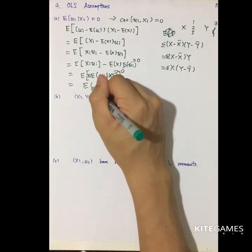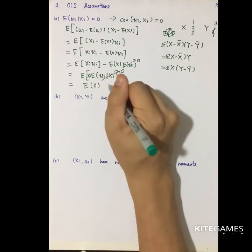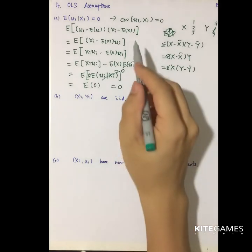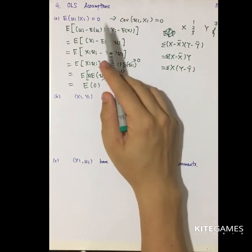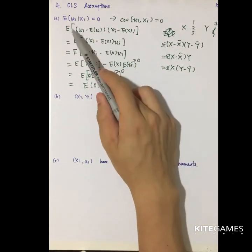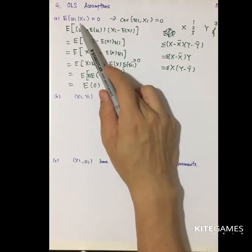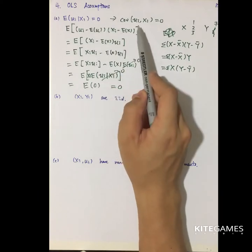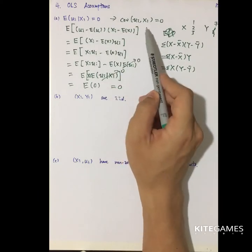So this is actually the expected value of zero. Thus, the covariance between x and u_i is zero. This is the implication of the first assumption: E[u|x_i]=0 means the covariance between u_i and x_i is zero.